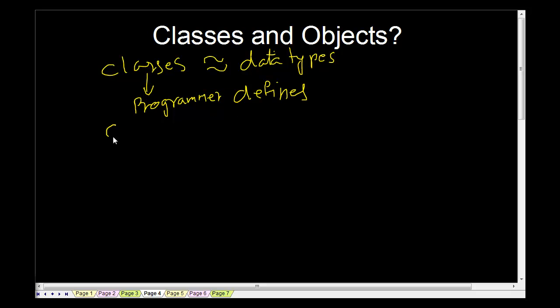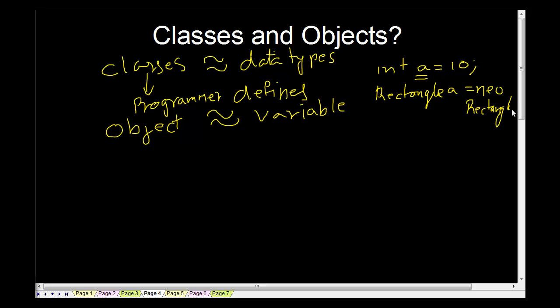And let's see what is an object. Since class is very similar to data type, an object is very similar to a variable. For primitive types like int, we have a variable called 10, termination of the statement, semicolon. So if you create a class called say rectangle, then you would have rectangle A equal new rectangle. So A over here is an object of the class type rectangle.